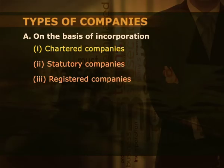First, chartered companies. The Crown, in exercise of the royal prerogative, has the power to create a corporation by the grant of a charter to persons assenting to be incorporated. Such companies or corporations are known as chartered companies. Examples are the Bank of England (1694) and the East India Company (1600). The powers and nature of business of a chartered company are defined by the charter which incorporates it. After the country attained independence, these types of companies do not exist in India.